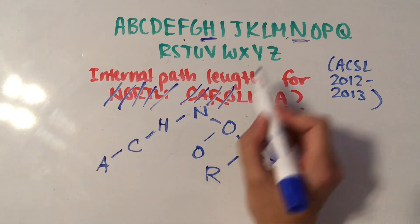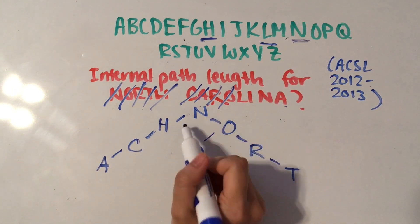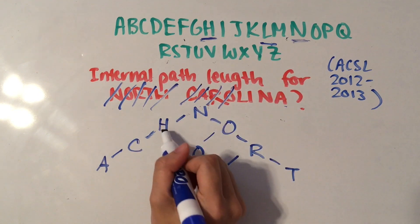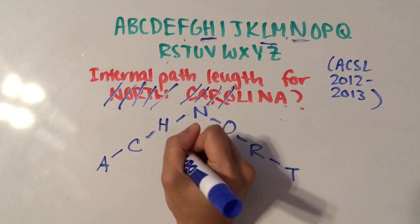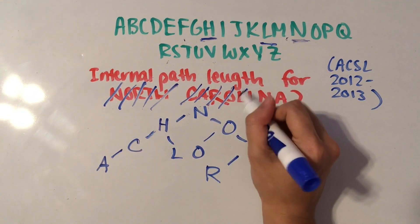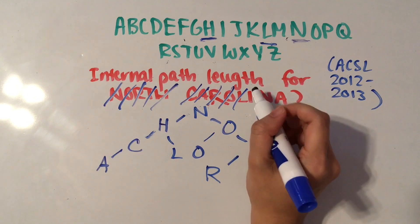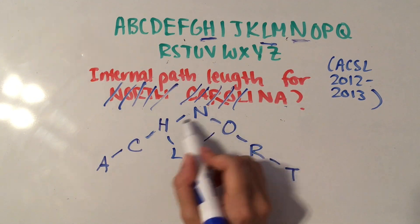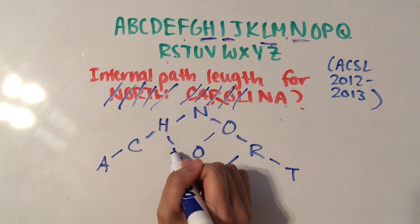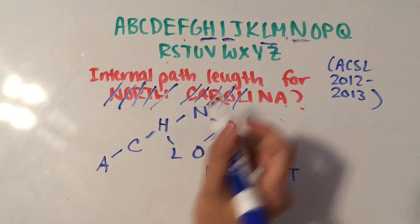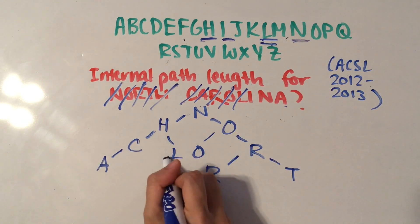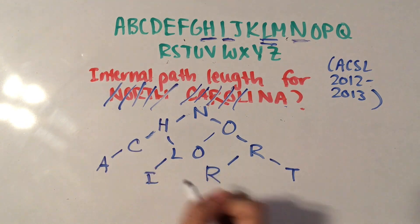And then we have L. L comes before N but after H, so if it comes after H then we'll have to put it to the right of H. Then we have I which comes before N but it comes after H, and it's before L, so if it's before L then you put it to the left of L.